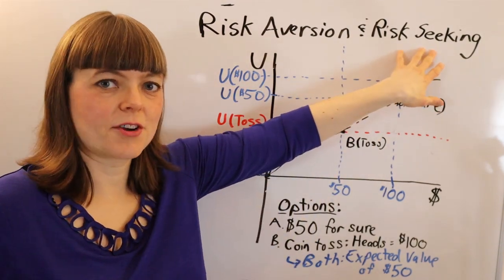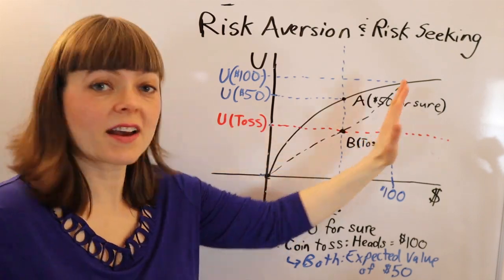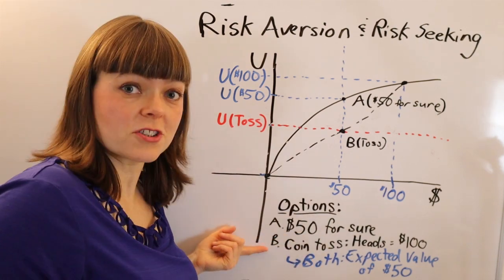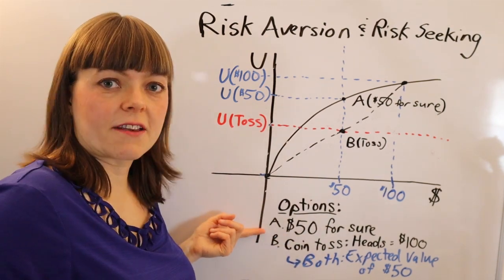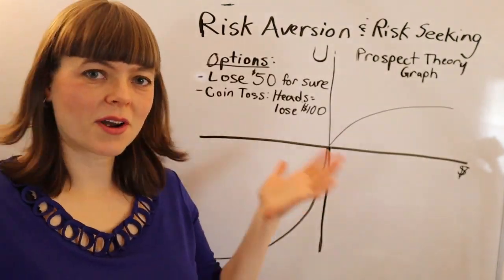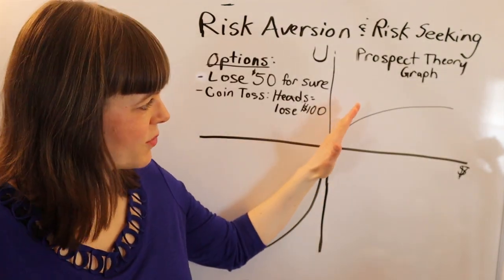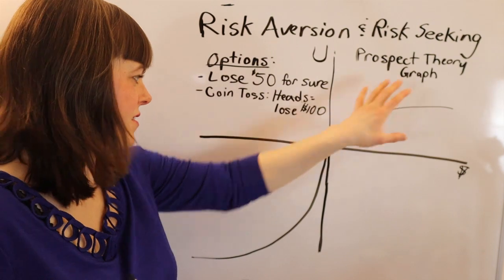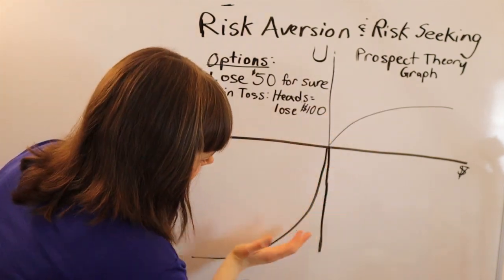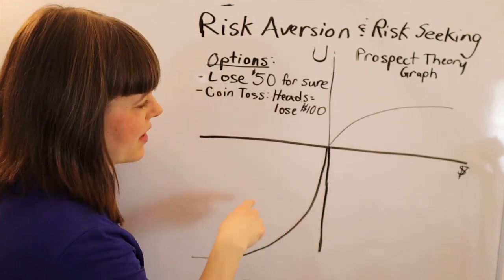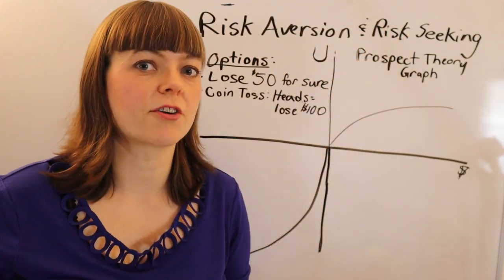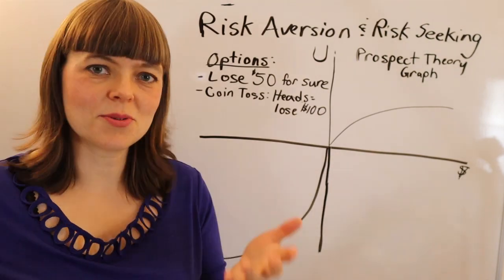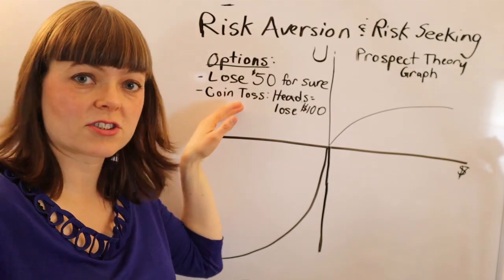What about risk-seeking behavior? We know that's associated with a convex utility function shape. Let's go over that doing the same exercise, except for someone who prefers the coin toss over getting $50 for sure. Here we have the prospect theory graph. In the positive realm, we still have the same diminishing marginal utility — nothing's different about the first quadrant. What's different is in the negative realm, we have a convex utility function shape. Convexity is going to be associated with risk-seeking behavior, and there is a lot of evidence that this is how people actually behave.